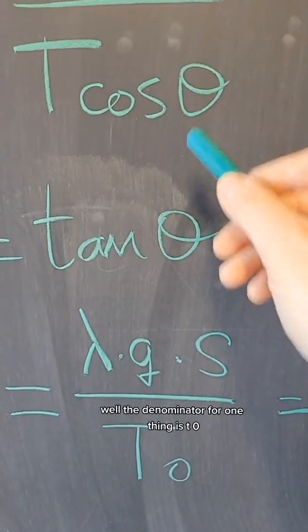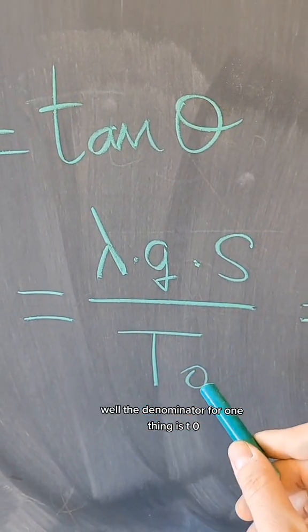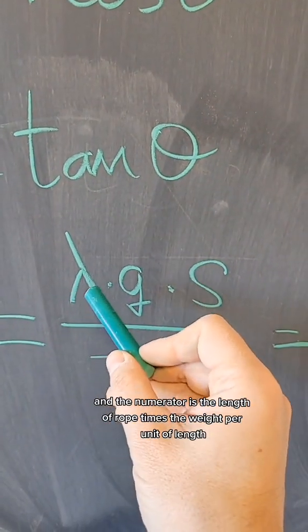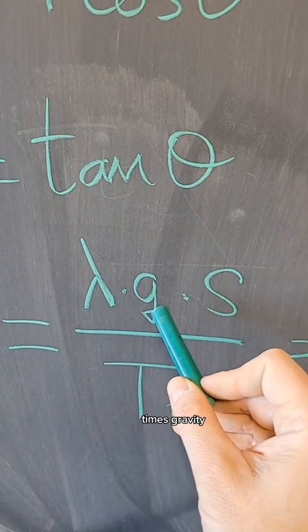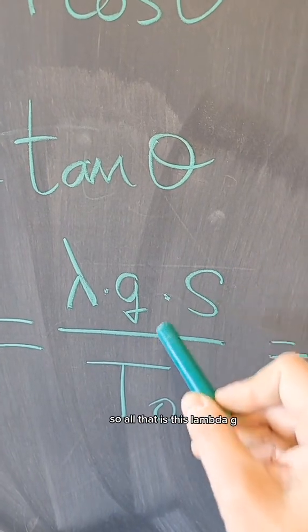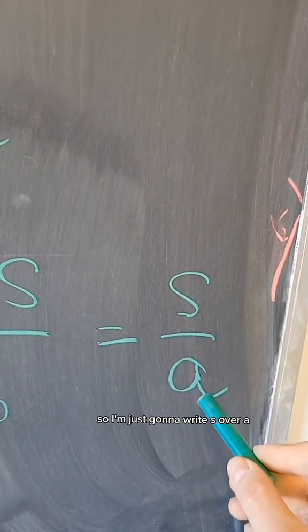What that gives me is that the denominator for one thing is T zero, and the numerator is the length of the rope times the weight per unit of length times gravity. So all that is lambda g. T zero is a constant, so I'm just going to write S over A.